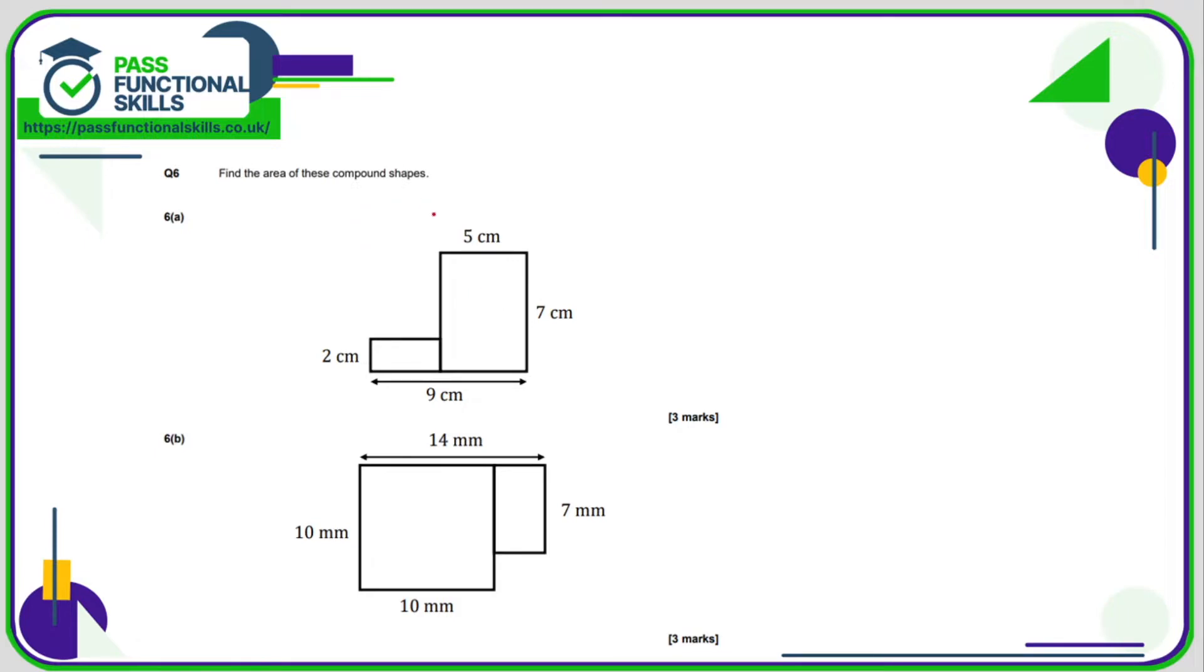For question number 6, the area of the compound shapes again. So split it into two rectangles, so 5 times 7 is 35. Here we've got a 2 by, we don't know this dimension here, but if it's 9 across the bottom and 5 from here to here, then this must be 4. Two 4s are 8, so 35 plus 8, which is 43 square centimetres.